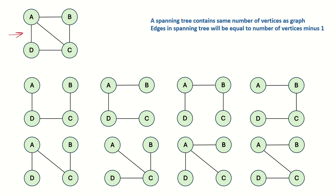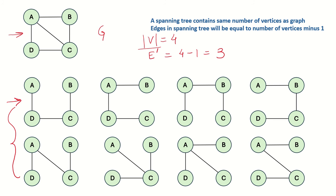Let's say this is a graph G which is given to us. We can see that there are 4 vertices, so the spanning trees would also have 4 vertices. The number of edges in the spanning tree would be the number of vertices minus 1, which is 4 minus 1, equal to 3.